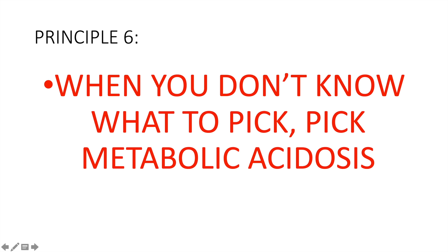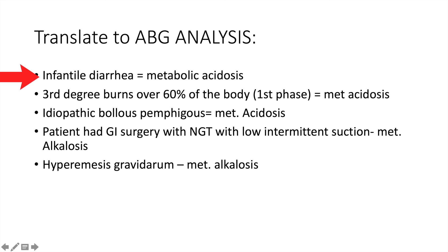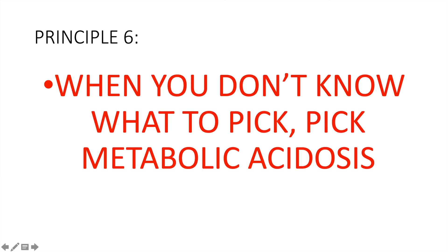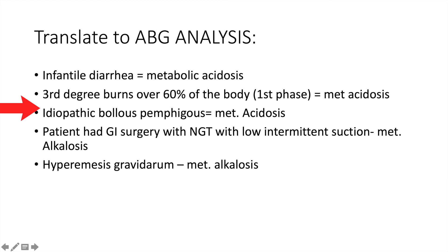And the last principle: when you don't know what to pick, always pick metabolic acidosis. Let's translate some examples. Infantile diarrhea — is it lung? No. Is it vomiting or suctioning? No. Then it is metabolic acidosis. Third-degree burns over 60% of the body, first phase — is it lung? No. Is it vomiting or suctioning? No. Then it is metabolic acidosis. Idiopathic bullous pemphigus — when you don't know, consider it metabolic acidosis. Patient had GI surgery with NGT with low intermittent suction — is it lung? No. Is it vomiting or suctioning? Yes. So it is metabolic alkalosis. Hyperemesis gravidarum — is it lung? No. Is it vomiting or suctioning? Yes, it is vomiting. So it is metabolic alkalosis.